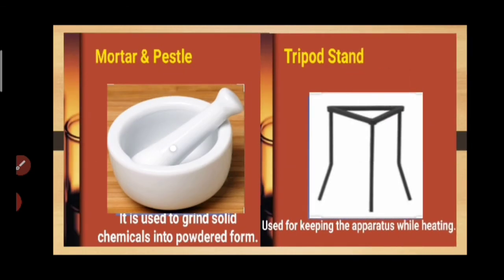The mortar and pestle is a kind of grinder — similar to what you find in your kitchen — and is used in the lab to grind solid chemicals into powdered form. The tripod stand is made of iron and is used to support apparatus during heating.